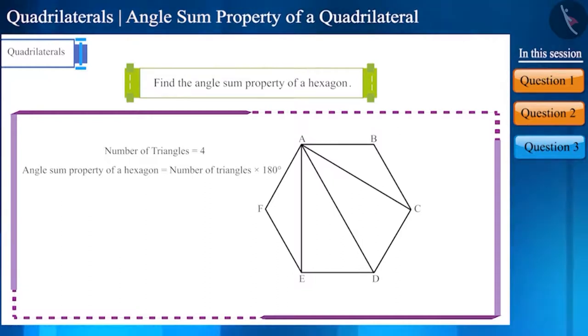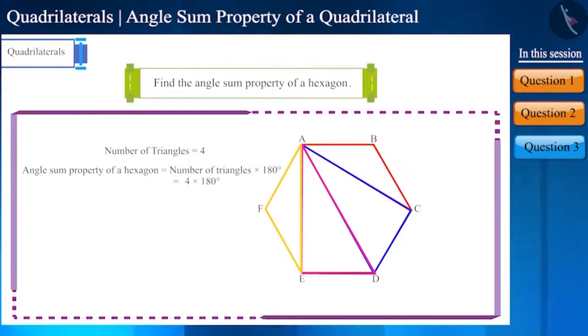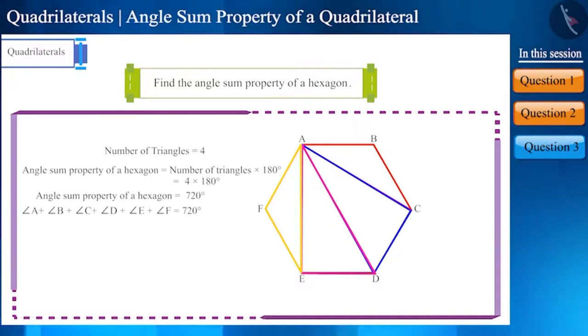The product obtained will be the sum of all the angles of a hexagon. You can see that we have got four triangles. That is, the sum of all the angles of a hexagon will be 4 multiplied by 180 degrees, which equals 720 degrees.